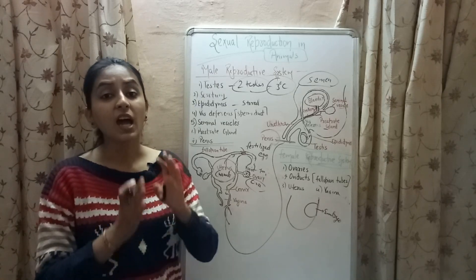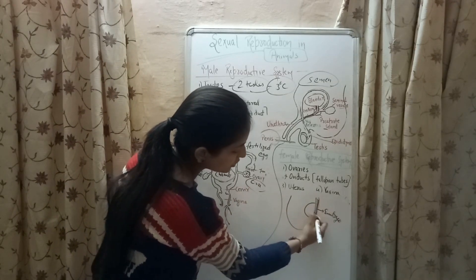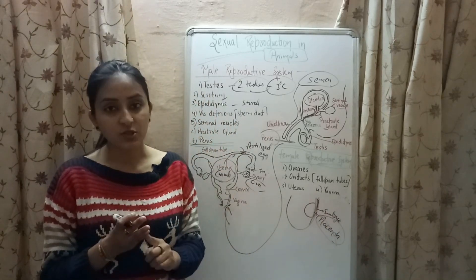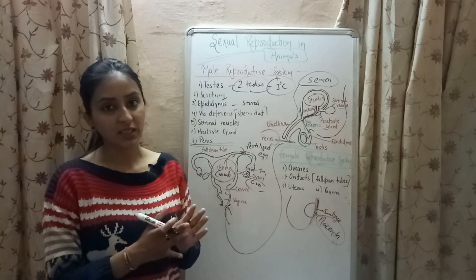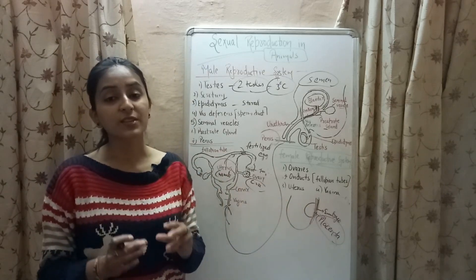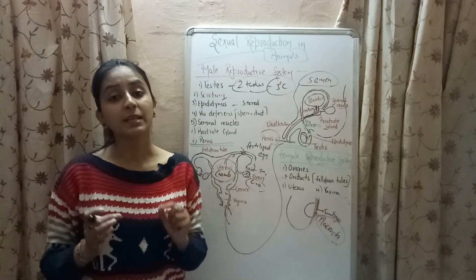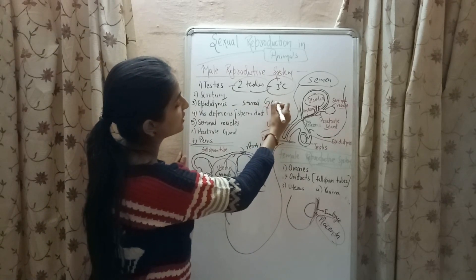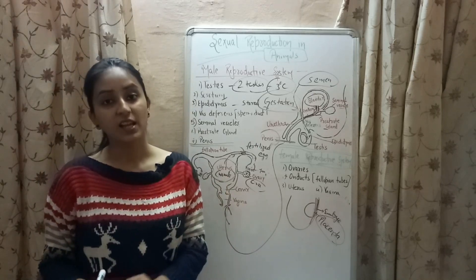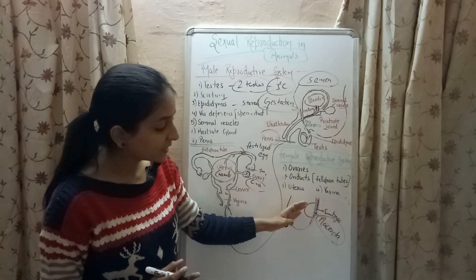After implantation, a tissue develops between the uterine wall and the embryo, known as placenta. The placenta helps in the exchange of oxygen, food and waste products between the mother and the developing fetus. After a period of nine months, which in biology is known as gestation, the baby is expelled out from the mother's body. Gestation is the duration during which the development of the fetus takes place inside the mother's body.